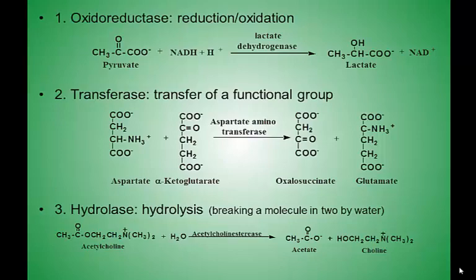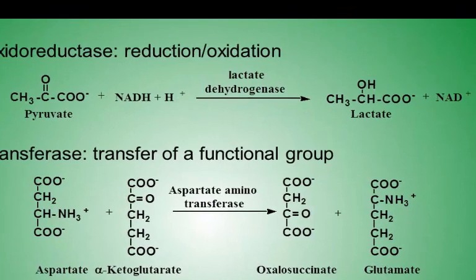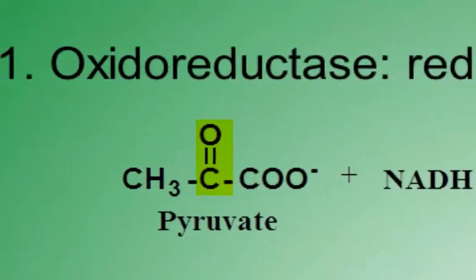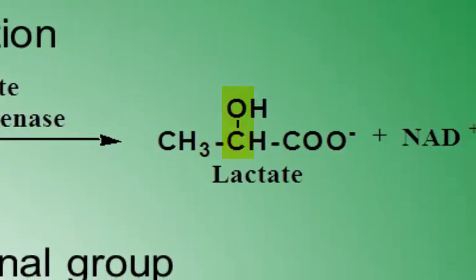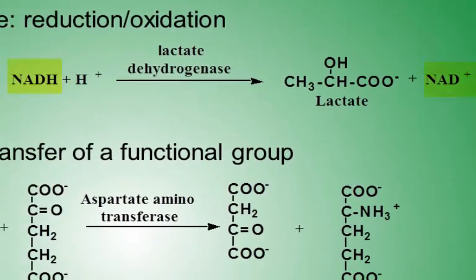Oxidoreductase catalyzes reduction oxidation reactions. Here we see the pyruvate molecule being reduced because of the addition of hydrogen to the oxygen of the C double bond O and the fact that the carbon double bond O is changed to a carbon single bond O. The NADH molecule was oxidized because it became NAD plus and lost the hydrogen.